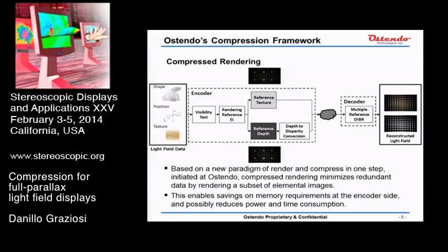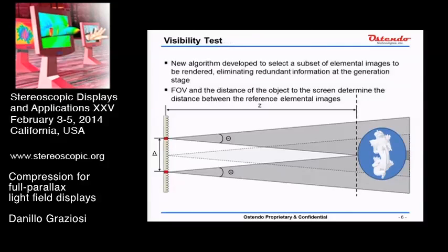The elemental images selected to render — we obtain the texture and the per-pixel depth of each of those elemental images. Per-pixel depth is converted into disparity, everything is packetized together and sent to the decoder. At the decoder side, we have a multiple reference depth image-based rendering algorithm that reconstructs the entire light field. The visibility test is a new algorithm developed to select a subset of elemental images to be rendered, eliminating redundant information at the generation stage. We take the field of view and the distance of the object to the screen and determine the distance between the reference elemental images. All the elemental images in between are redundant and can be reconstructed using the references.